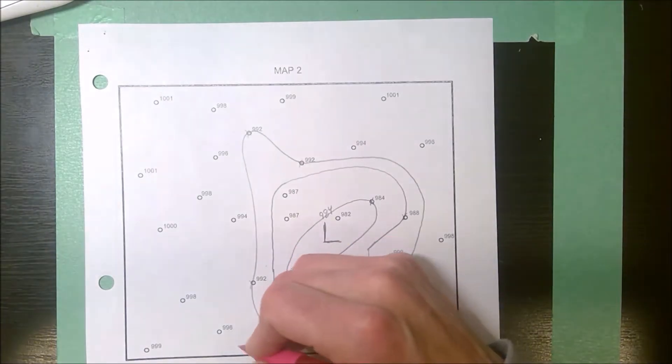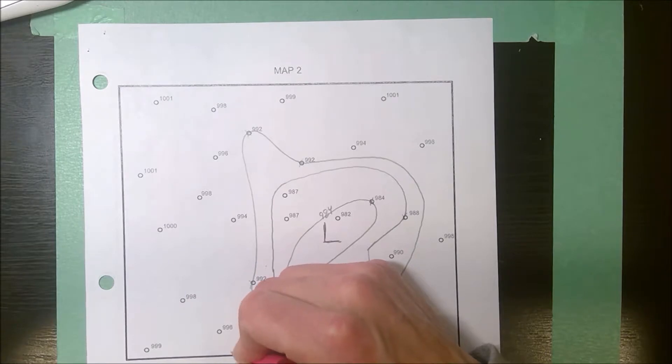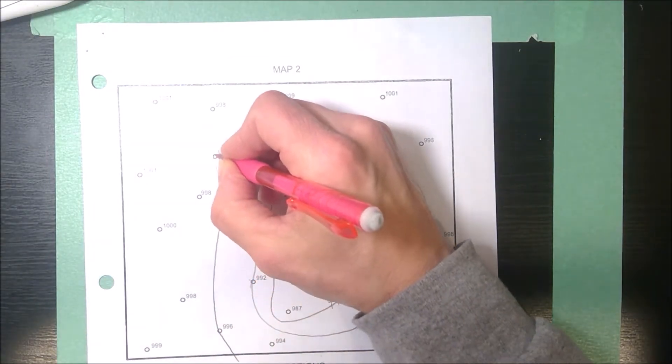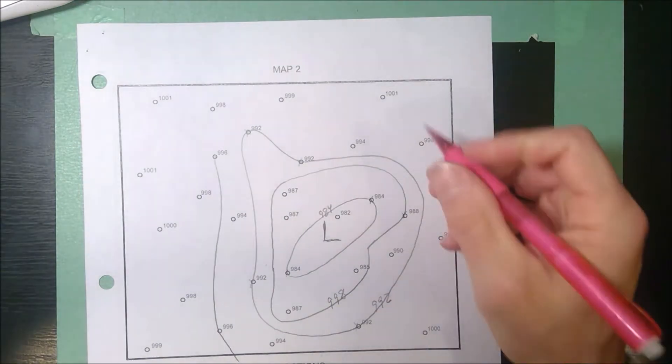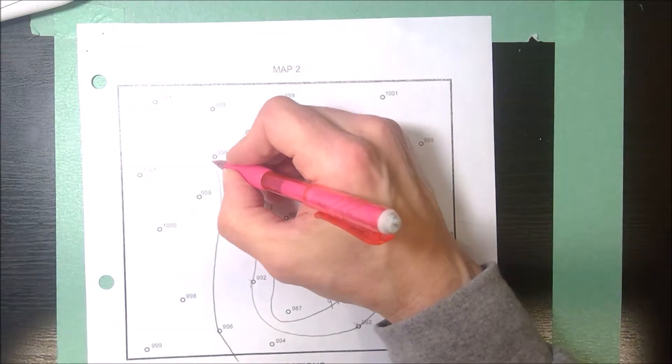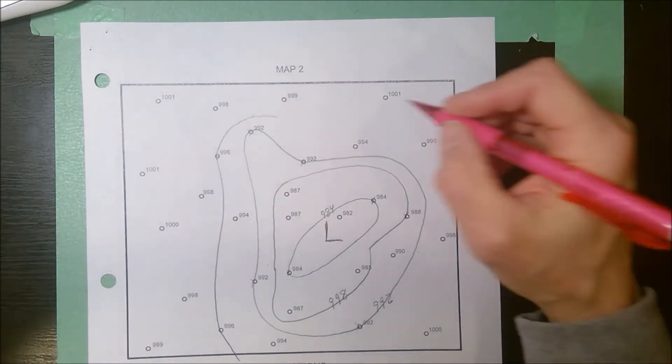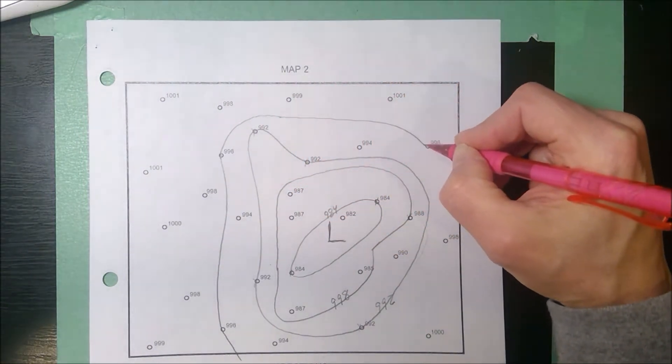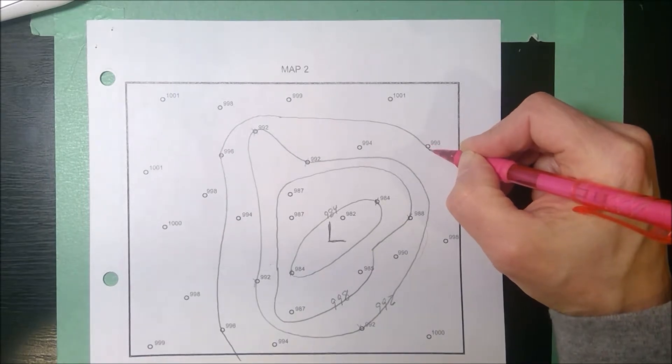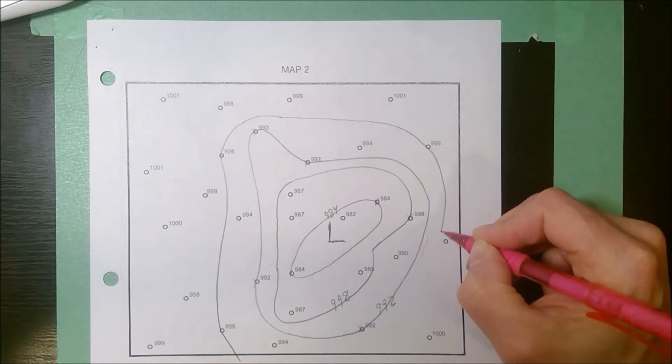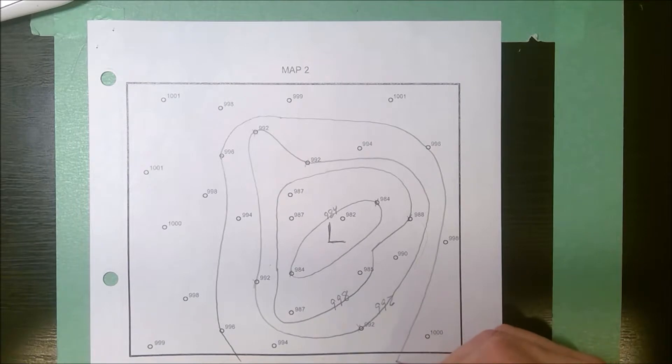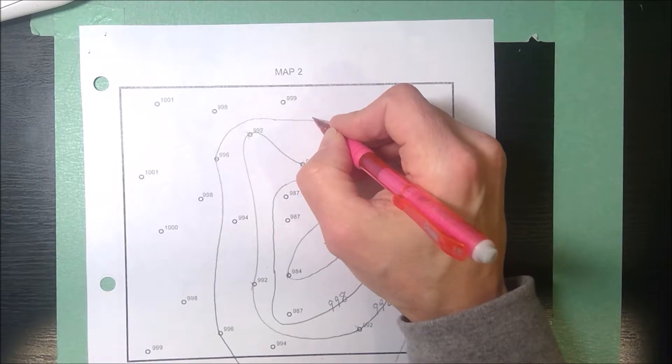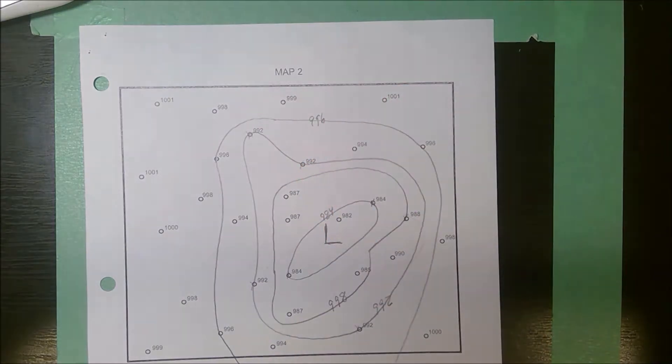996. My 996 go off the page. I'm going to hit that 996. It definitely has to go between these two. So my line comes here. I want to make it a continuous line. I hit this 996. It goes between the 998 and I'm going to take it off the map. Label this one 996.